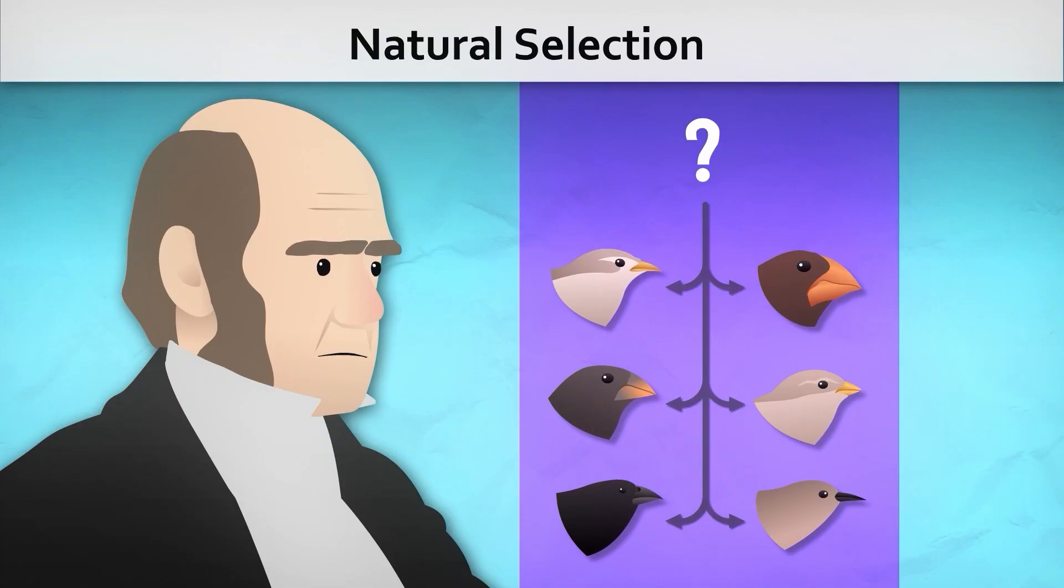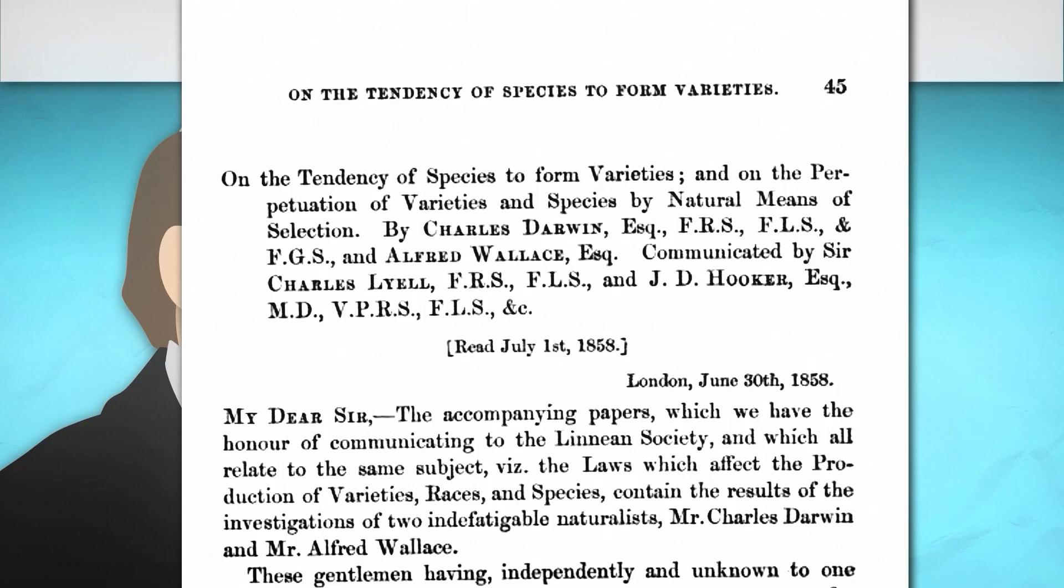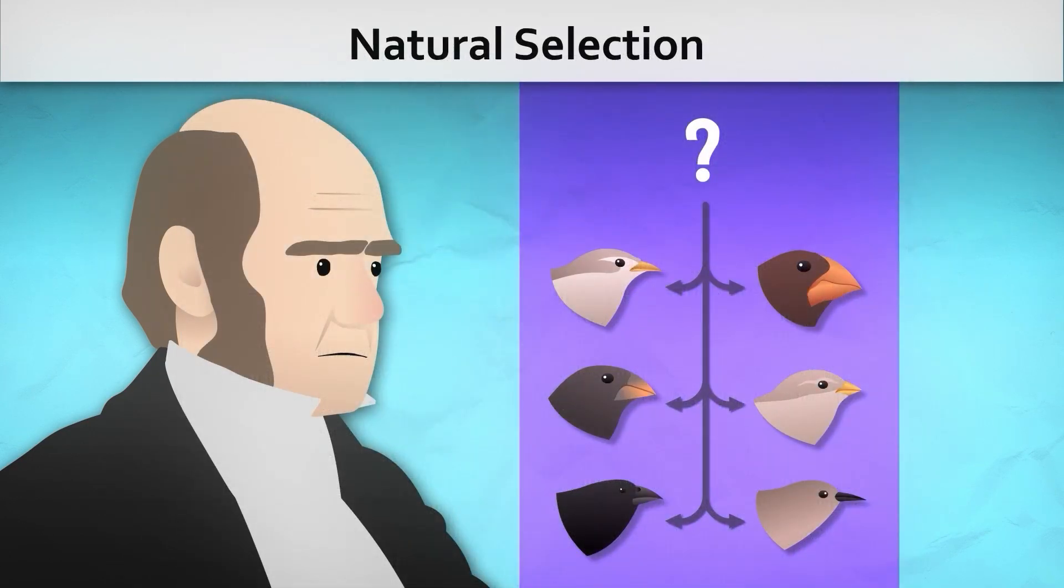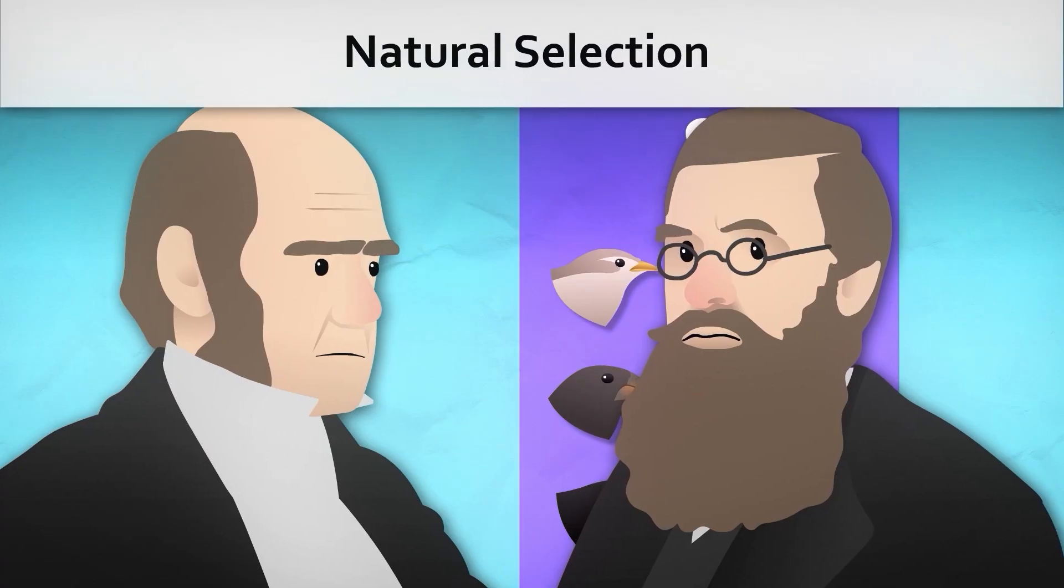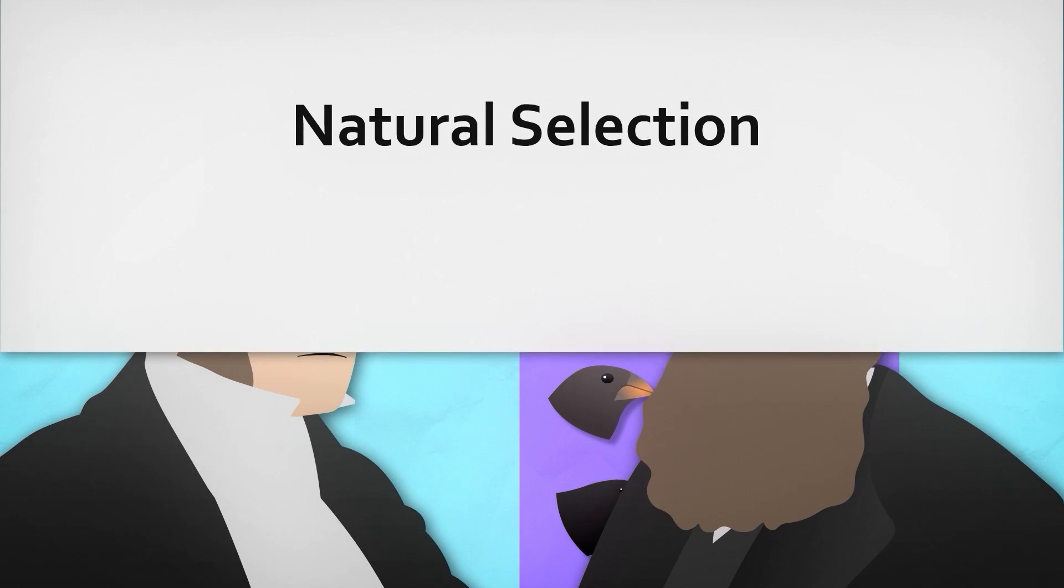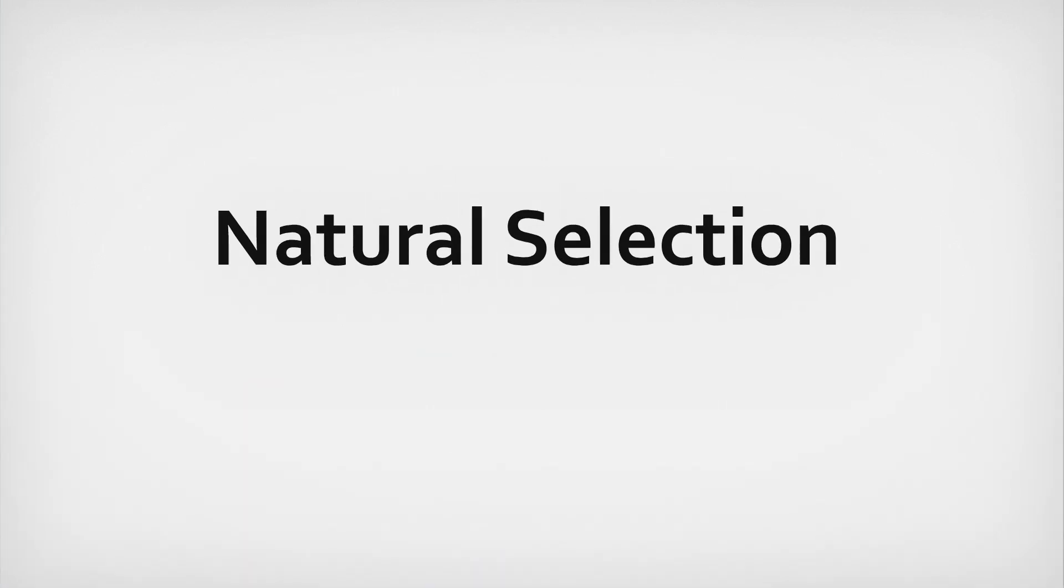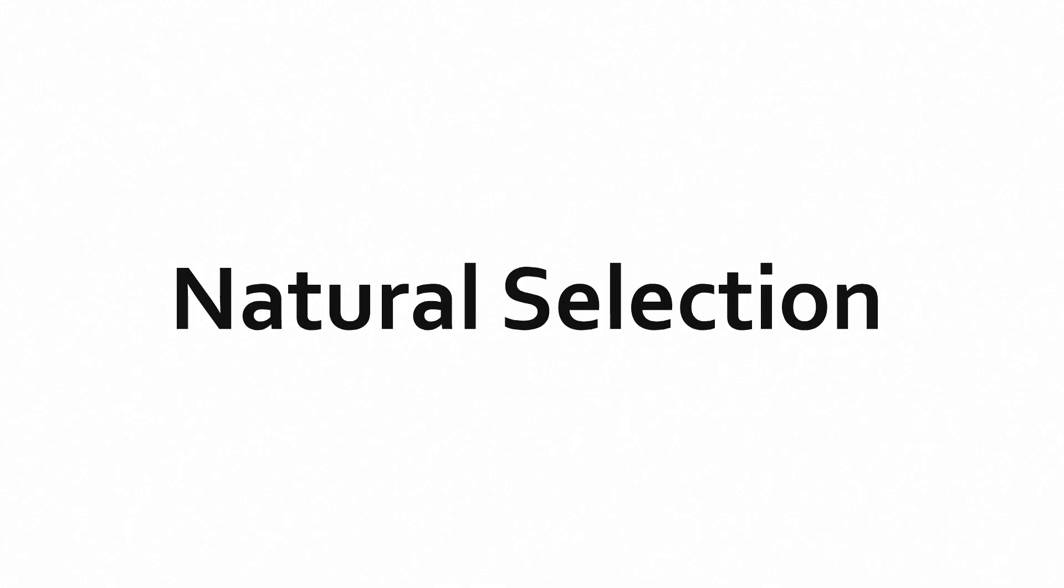About 20 years after his expedition, Darwin published his conclusions in a joint paper with the naturalist Alfred Russel Wallace, who came to the same conclusion independently. Their ideas were not immediately accepted, but as research progressed and new evidence surfaced, the theory became established.